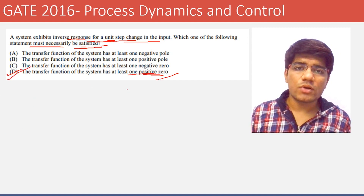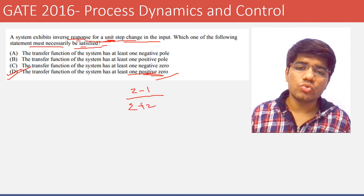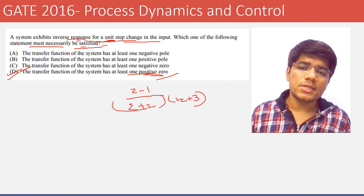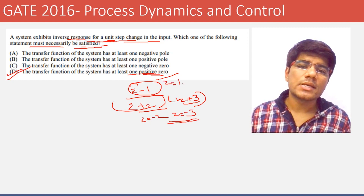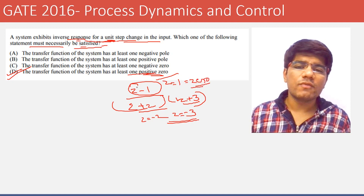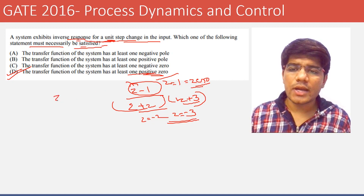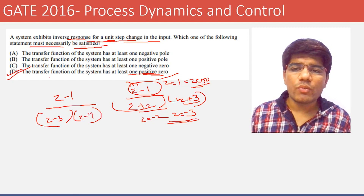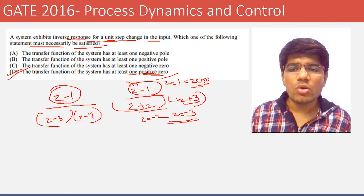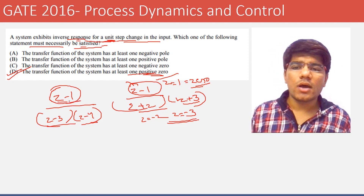You should understand what poles and zeros are. For example, given (Z−1) / [(Z+2)(Z+3)], the poles are Z = −2 and Z = −3, and the zero is Z = 1. The numerator going to zero gives the zeros; the denominator going to zero gives the poles. So for inverse response, at least one zero must be positive.